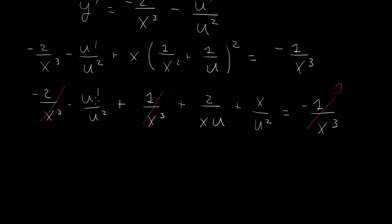And then we have a u prime over u squared with a minus sign. We would like to exhibit a first-order linear equation. So we take this whole equation and multiply both sides by minus u squared.